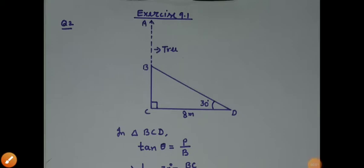Hello students, question number 2 from exercise 9.1. A tree breaks due to storm and the broken part bends so that the top of the tree touches the ground making an angle 30 degrees with it. The distance between the foot of the tree to the point where the top touches the ground is 8 meters. Find the height of the tree.